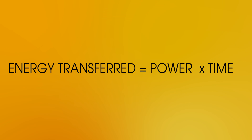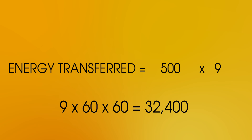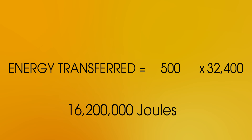The TV has a power of 500 watts and it's been left on for 9 hours. But we need that time in seconds — it's 9 times 60 times 60, which gives us 32,400 seconds. So, energy transferred equals power times time: 500 times 32,400 gives us 16,200,000 joules.